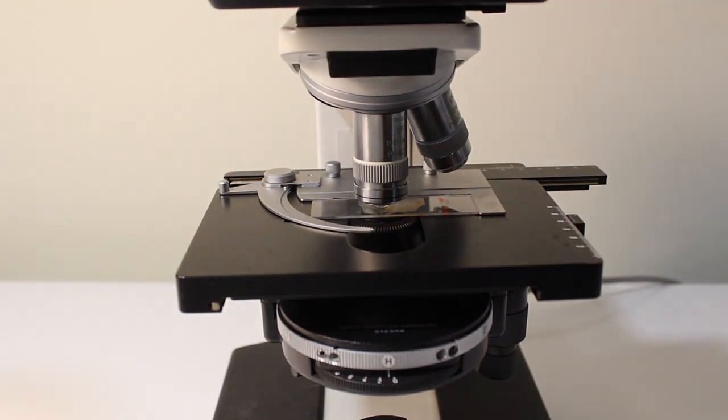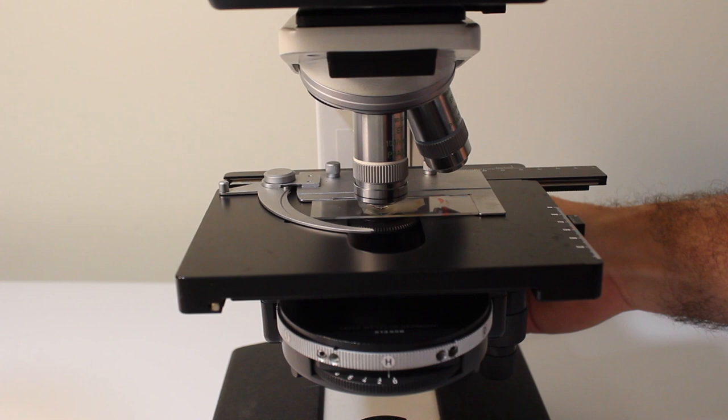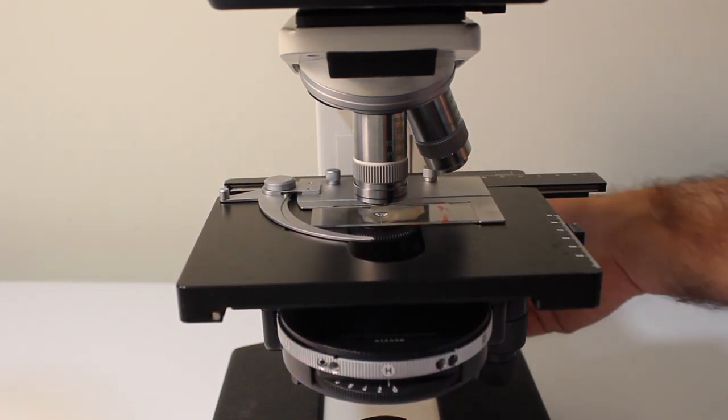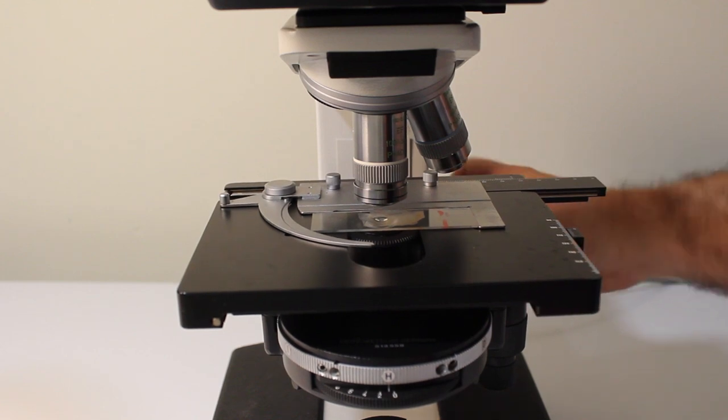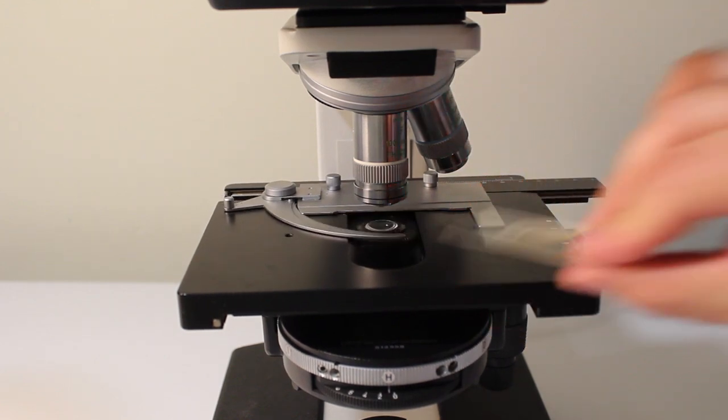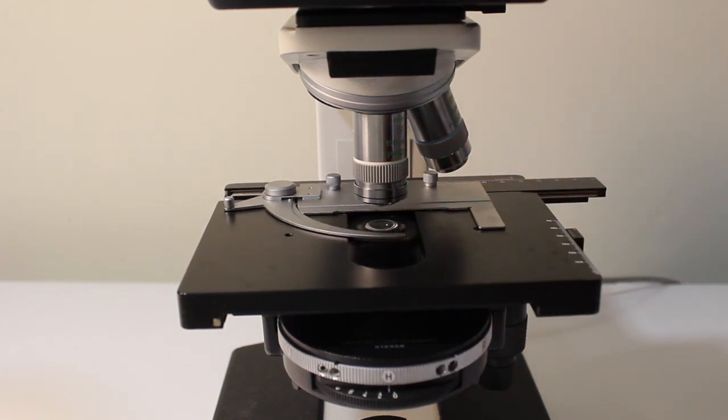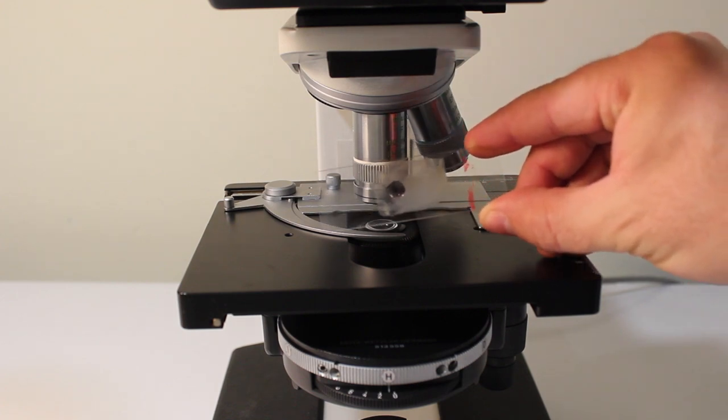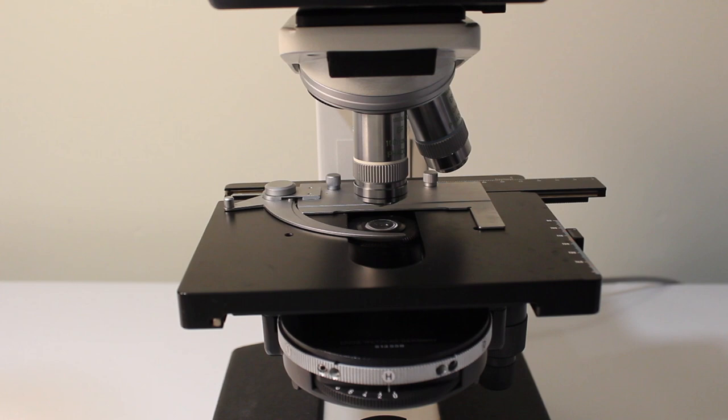Once you're done, you're going to need to clean the lens. To do this, the first thing you want to do is lower the stage to clear your slide from the lens, and then remove the slide. Once the slide has been contaminated with oil, you should consider the slide sort of permanently damaged, at least until you give it a thorough cleaning with something like Windex or another sort of glass cleaner.